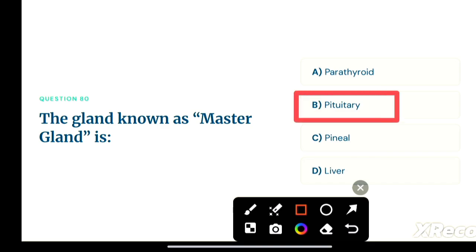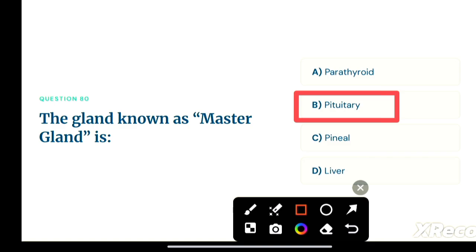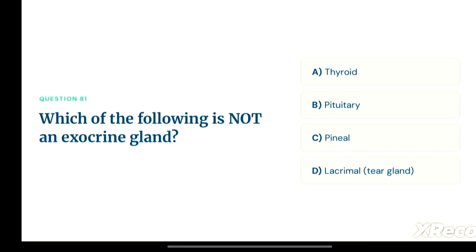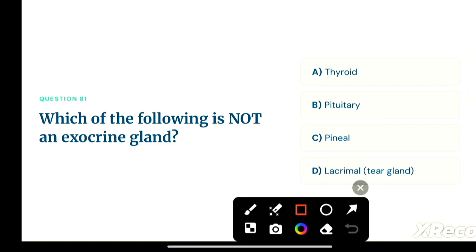Next question: which of the following is not an exocrine gland? Option A: thyroid, option B: pituitary, option C: pineal, option D: lacrimal (tear gland). The correct answer is option D, lacrimal — the tear gland is not an exocrine gland.